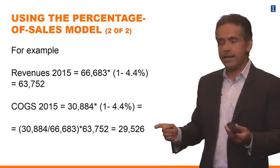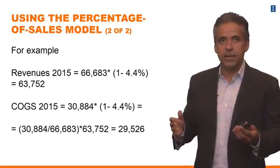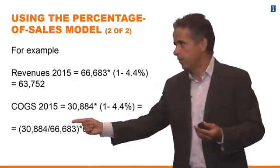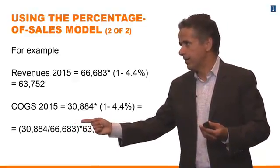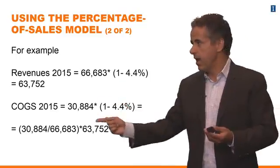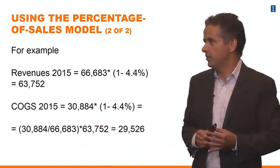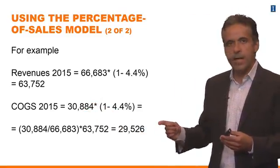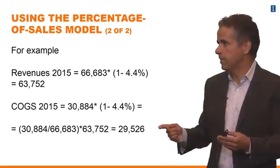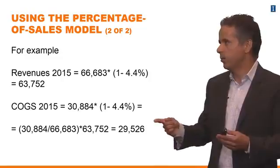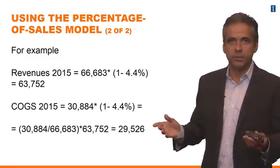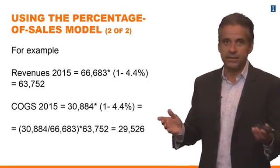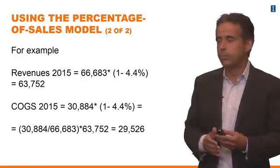The other way to think about it is that the company is going to keep the same fraction. In 2014, COGS were 30.9 billion dollars and revenue was 66.7 billion dollars — so that is a fraction. What's going to happen in 2015 is that PepsiCo is going to keep the same fraction of COGS, so COGS is going to decrease to 29.5 billion. That's how you would use a percentage of sales model.